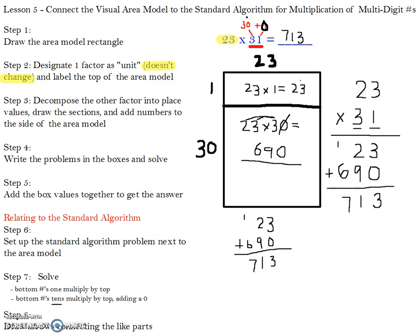And finally, step 8 is we want to look at the connections and the similarities between the area model and the standard algorithm. So we just want to draw arrows connecting the like parts. So for example, in our standard algorithm we have 23 here, which is very similar or exactly the same as our first section of our area model. Our second number, 690, where do you think that is similar? Yep, the big one. So we see that our exact two values from our area model are the same values of our standard algorithm. And then if you take this as a whole here, this whole addition problem is exactly the same as adding the area model values. And we come up with the same answer: 713 and 713.